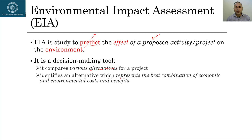EIA identifies the alternative which represents the best combination of economic and environmental costs and benefits. As I mentioned in my last lecture, every project has some negative externalities, and the whole EIA exercise is done to minimize those negative externalities. It compares various alternatives and based on evaluation you pick the right alternative.